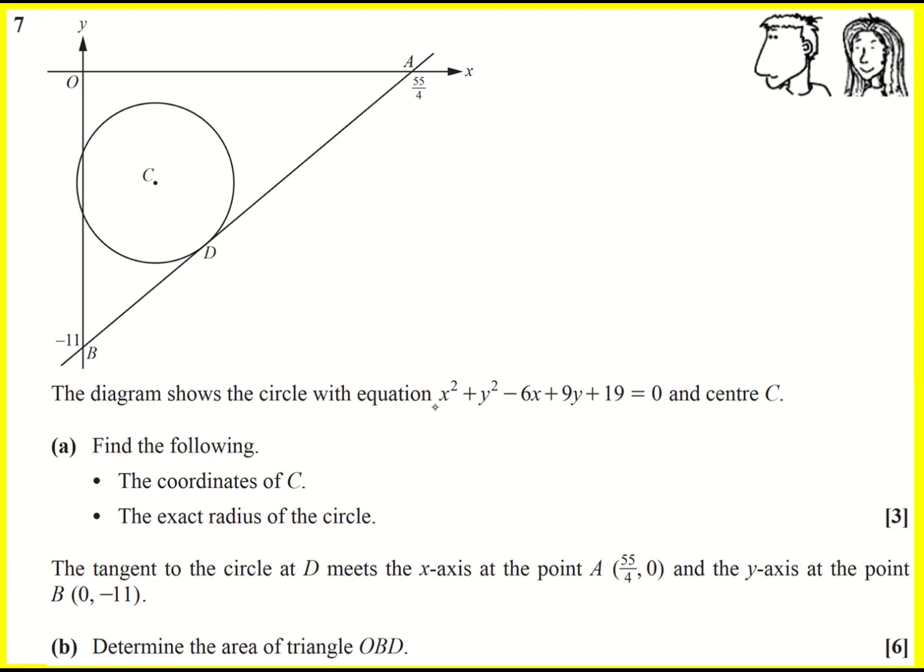Well, we've got everything we need from this equation. We just need to write it in the correct form: x minus a squared plus y minus b squared equals r squared, where the center is ab and the radius is r. So let's give that a go.